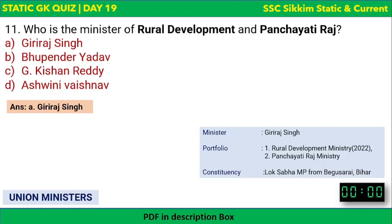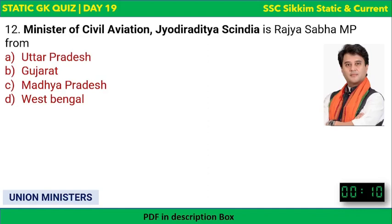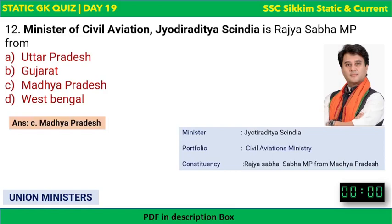Next question: Civil Aviation Minister Jyotiraditya Scindia is a Rajya Sabha MP from which state? The options are Uttar Pradesh, Gujarat, Madhya Pradesh, or West Bengal. The correct answer is Madhya Pradesh. Jyotiraditya Scindia is the Union Minister of Civil Aviation and is a Rajya Sabha MP from Madhya Pradesh.